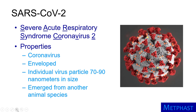SARS-CoV-2 emerged in 2019 from another animal. It has many similarities to a coronavirus identified in bats, but the virus was likely passed to another animal before being passed from that animal to humans.